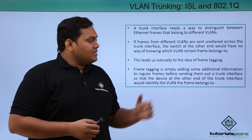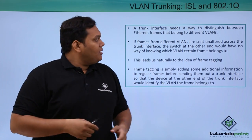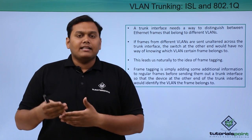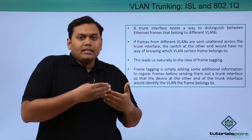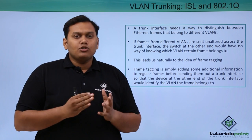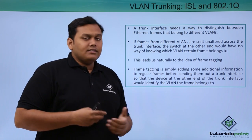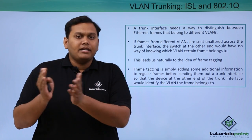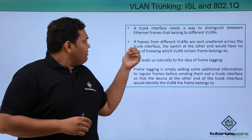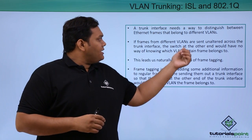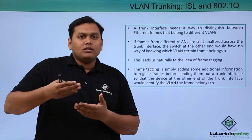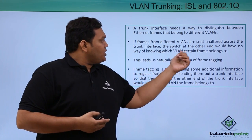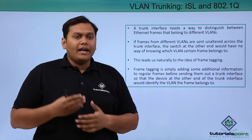A trunk interface needs a way to distinguish between Ethernet frames that belong to different VLANs. When we get Ethernet frames from different VLANs, this trunk interface needs a way to distinguish where they are coming from and where they have to go. If frames from different VLANs are sent unaltered across the network, the switch at the other end would have no idea.